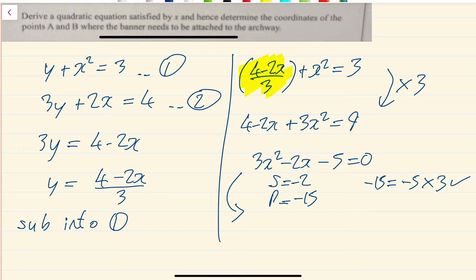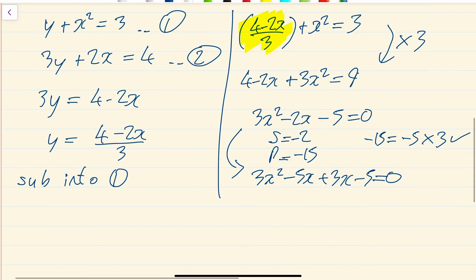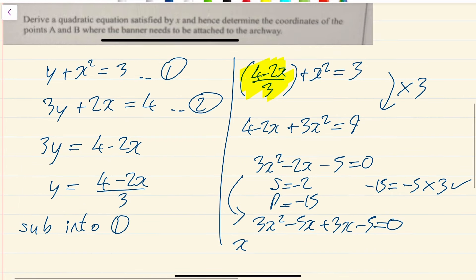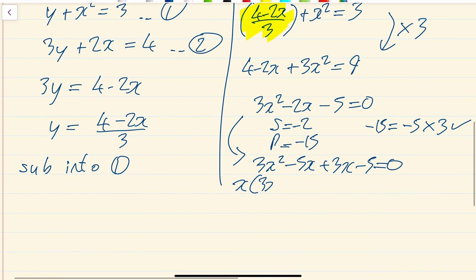So we'll rewrite this as 3x squared minus 5x plus 3x minus 5 equals 0. Pull an x outside a bracket, you're left with 3x minus 5. And over here, pull a 1 outside, you're left with 3x minus 5. So it becomes 3x minus 5 times x plus 1 is equal to 0.